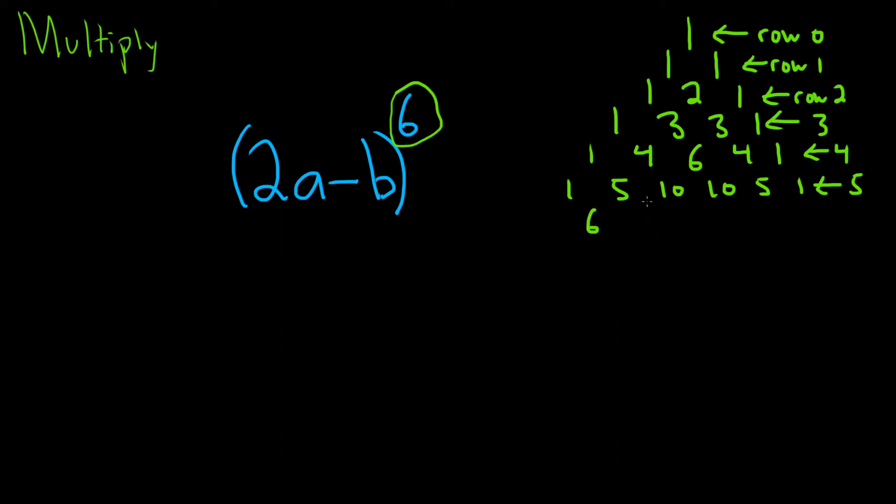1 plus 5 is 6. 5 plus 10 is 15. 10 plus 10 is 20. 10 plus 5 is 15. 5 plus 1 is 6. And now we have 1's on the sides. So this is row 6. This is the row that we're going to use to help us expand this binomial. It's a binomial to the 6th power.